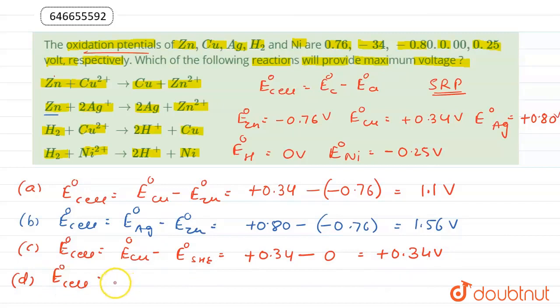In the last option, hydrogen is getting oxidized and nickel is getting reduced. So this is E°nickel - E° standard hydrogen electrode. It is equal to -0.25 - 0, that comes out to be -0.25 volts.